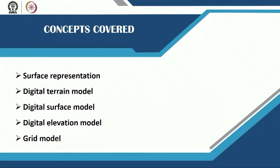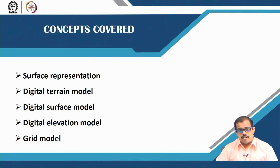So let us look at different surface models. In today's class I would be defining what we mean by a surface representation, then we would look at what is a digital terrain model, what is a digital surface model, and a digital elevation model, how you actually generate this, and then we have a grid model. We will look at all of these things in this particular class.